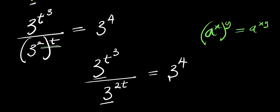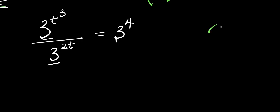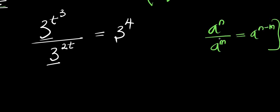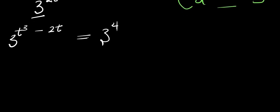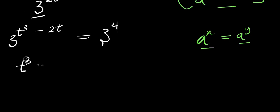Using the division identity — if you have a^n divided by a^m, that equals a^(n−m) — applying this here I get 3^(t³ − 2t) equals 3⁴. Now since the bases are the same, I can compare the exponents: t³ − 2t = 4.